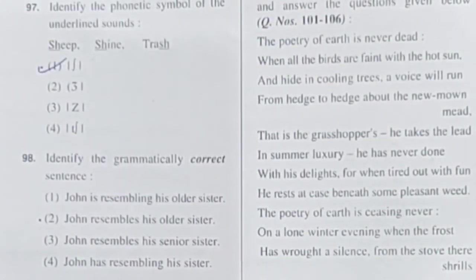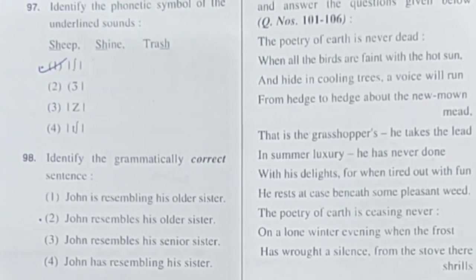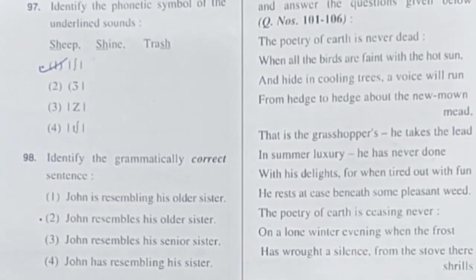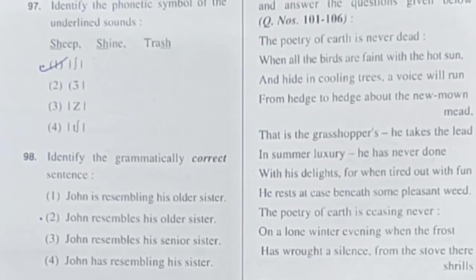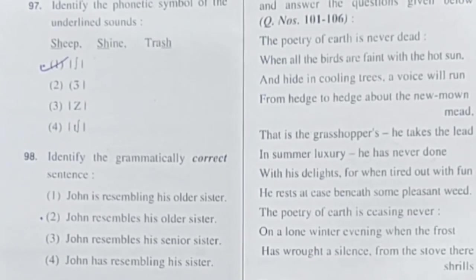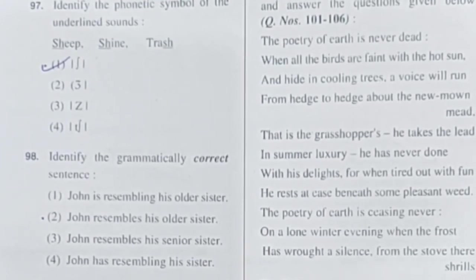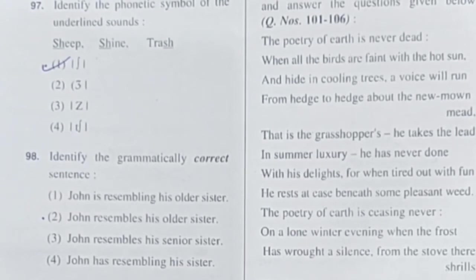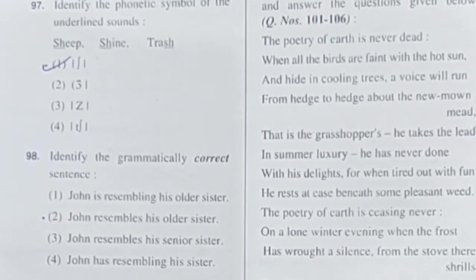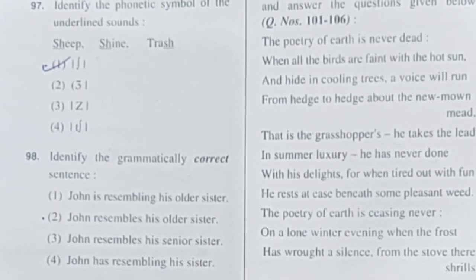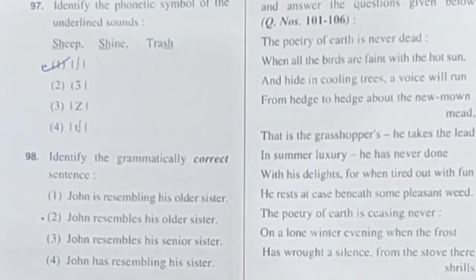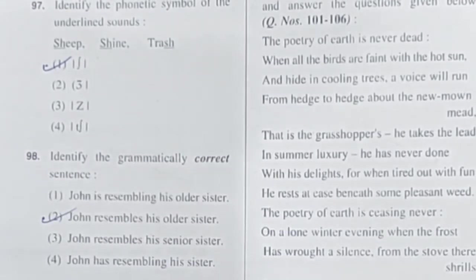Question 98: Identify the grammatically correct sentence. Option 1: John is resembling his older sister. Option 2: John resembles his older sister. Option 3: John resembles his senior sister. Option 4: John has resembling his sister. The verb used for resemblance is 'resembles,' meaning John's face matches his older sister's. So 'John resembles his older sister' — option 2 is correct.